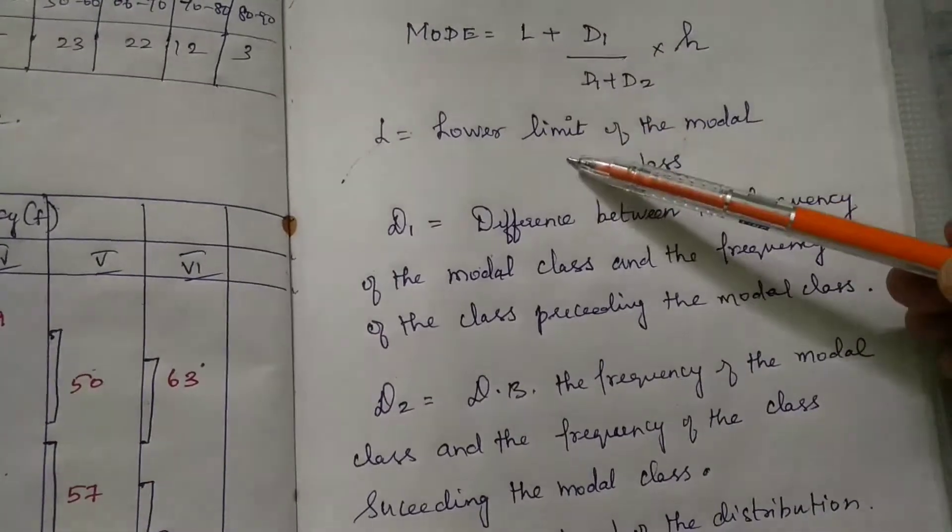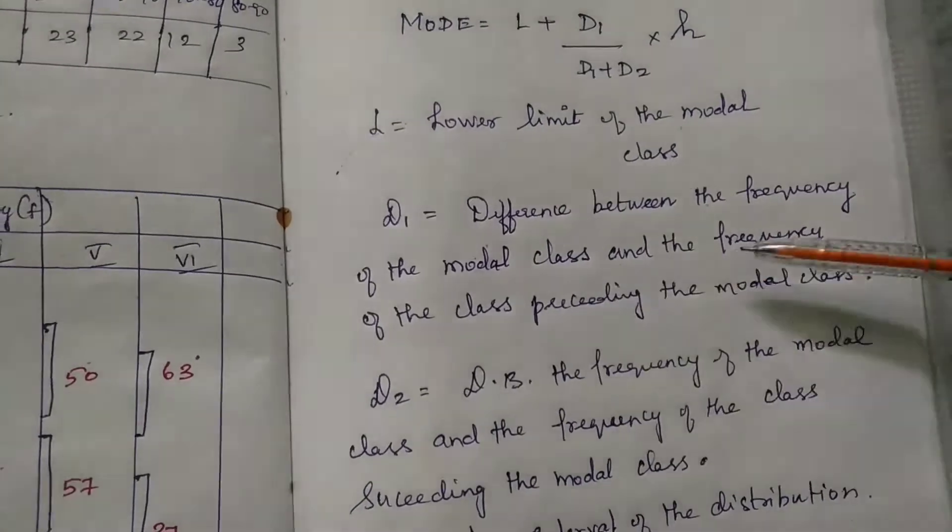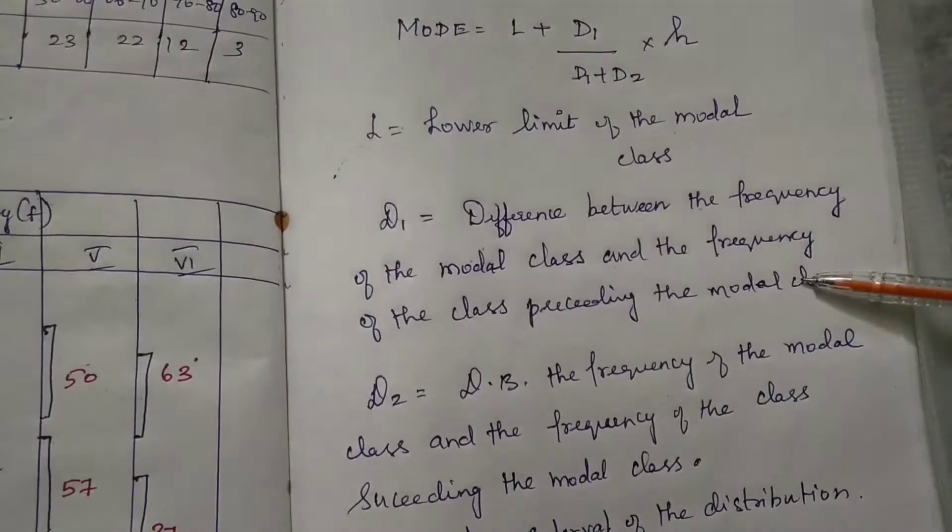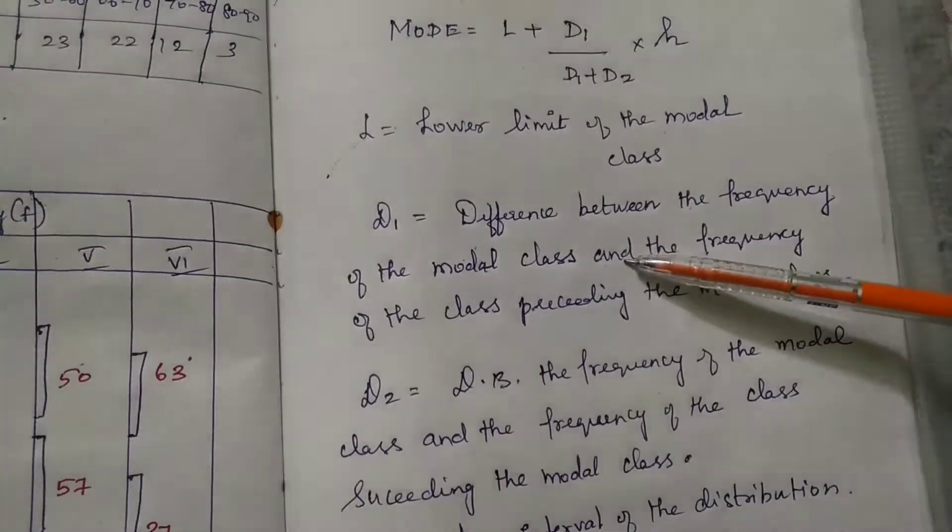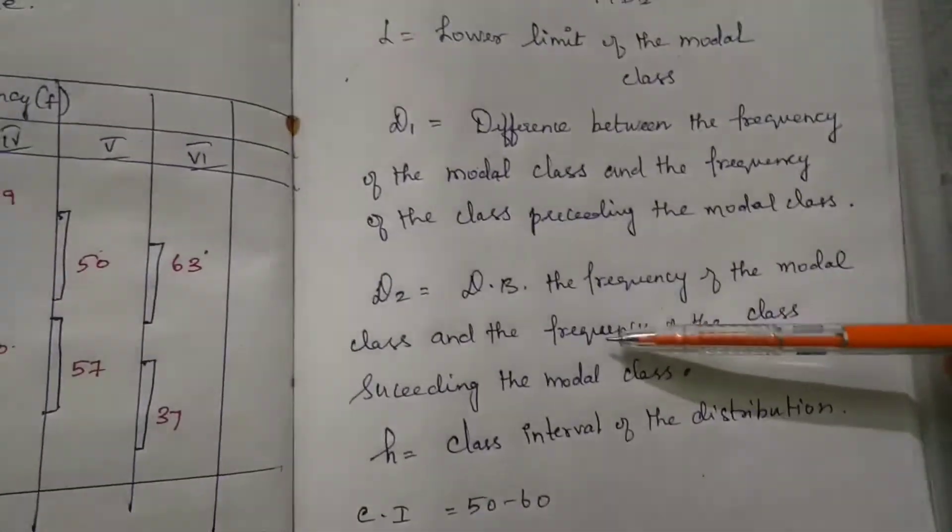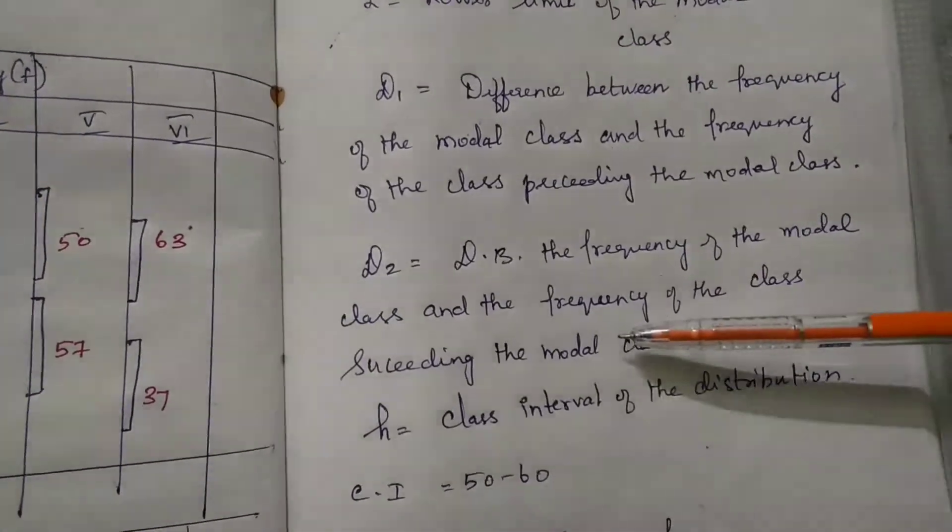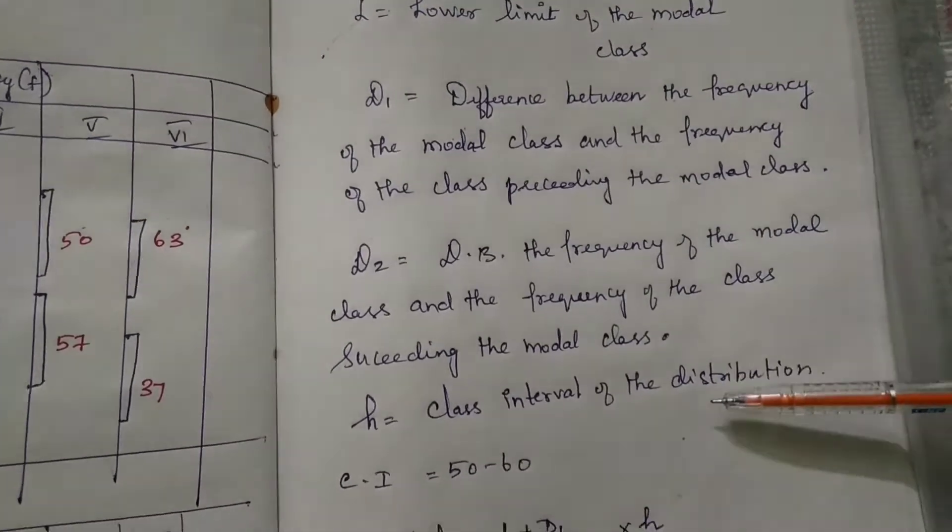L is the lower limit of the modal class. D1 is the difference between the frequency of modal class and the frequency of the class preceding the modal class. D2 is the difference between the model class and the frequency of the class succeeding the modal class. H is the class interval of the distribution.